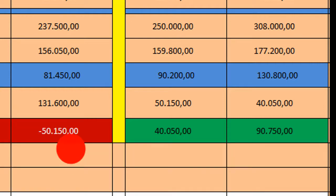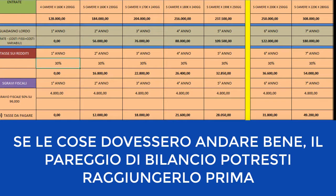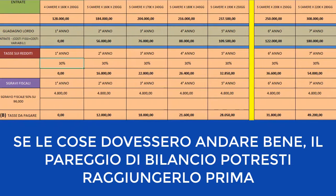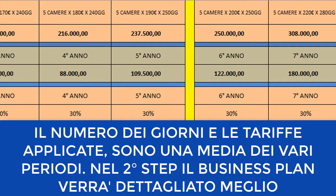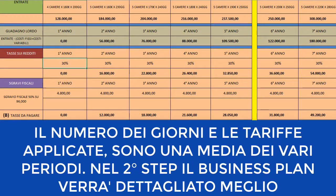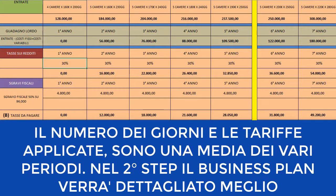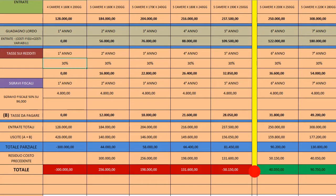Potresti pensare che 5 anni sembrino pochi per ammortizzare tutta la spesa iniziale. Però, ragionando per difetto come ho fatto, è probabile che tu riesca a occupare 6 camere invece di 5, ad avere più giorni di occupazione — anche 300 giorni — e ti auguro che sia così. Rimane più corretto fare un business plan per difetto, senza considerare eventuali finanziamenti regionali.